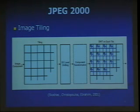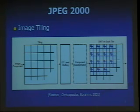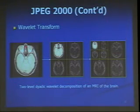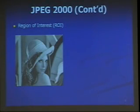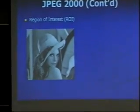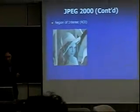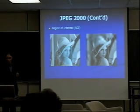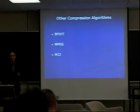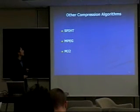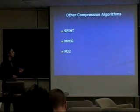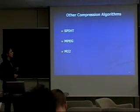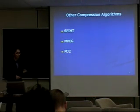The next algorithm is JPEG-2000, which is said to outperform JPEG. The first step in JPEG-2000 is image tiling, which is the division of the image into small tiles — and it is optional. The next step is the wavelet transform; here we can see a two-level dyadic wavelet decomposition of an MRI of the brain. One advantage of using JPEG-2000 is the ability to encode the region of interest with superior quality. There are also other promising algorithms not discussed here, like set partitioning in hierarchical trees based on discrete wavelet transform, the Motion Picture Encoding Expert Group, and MJ2, which is based on JPEG-2000 but in 3D.